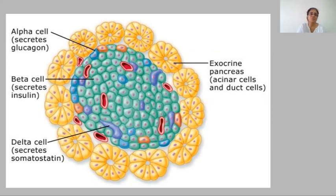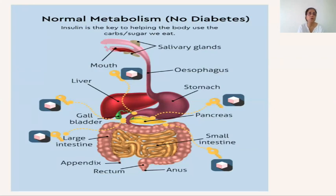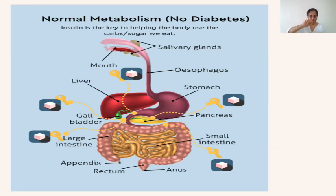Somatostatin is higher in hierarchy than both glucagon and insulin — alpha and beta cells do not move without the permission of somatostatin. Somatostatin is secreted by the delta cells. Now, to understand abnormal metabolism you must know what is normal. Insulin is the key that helps the body use carbs and sugars. The insulin fits into the keyhole, opens up the cell, and the cell takes up all necessary energy for proper function.